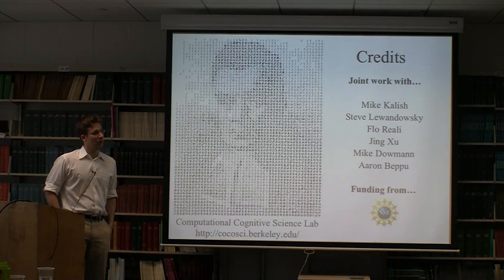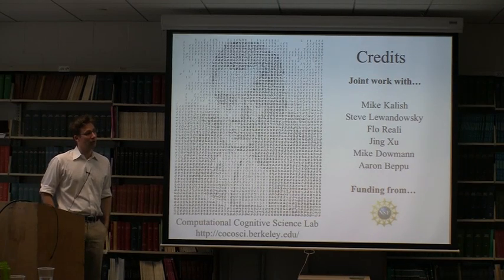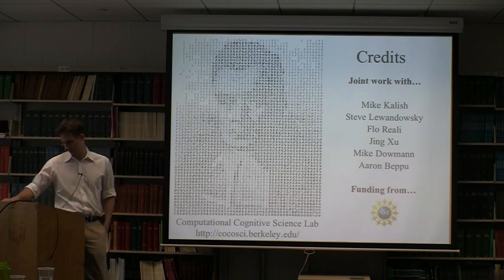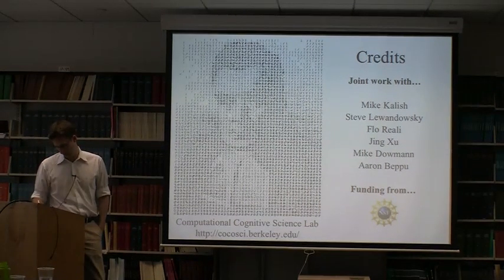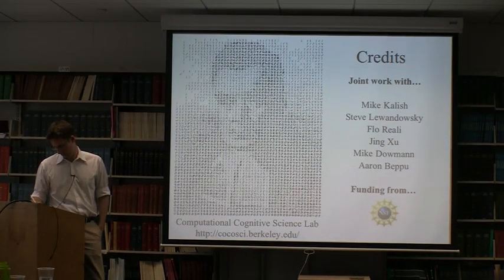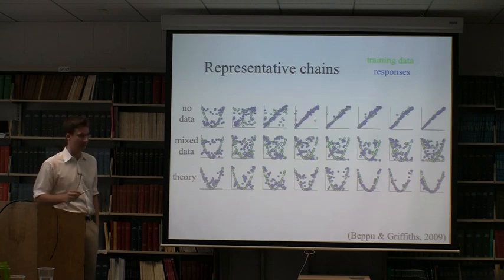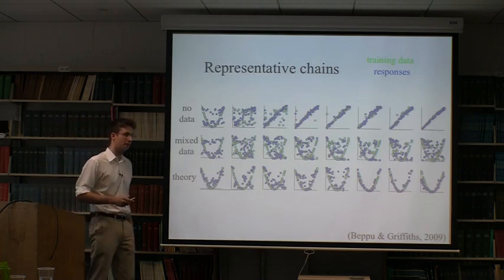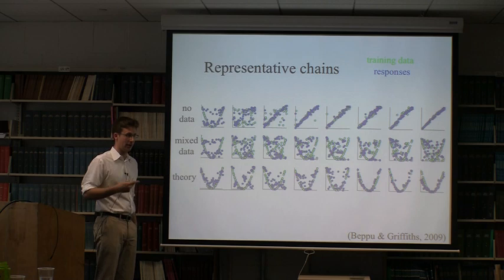Just a clarifying question. In those trials, like the last example with the quadratic, were the data that were transmitted to the next person the results during the training or after the training? They were the after training, the predictions.